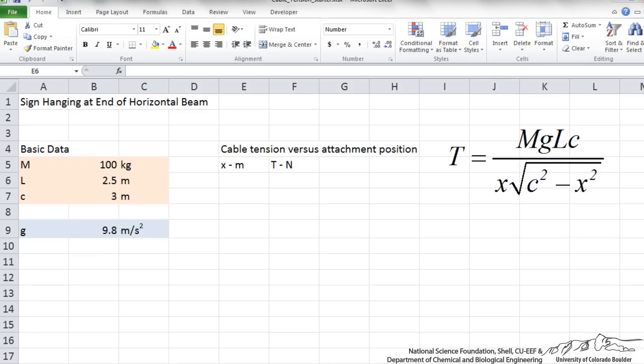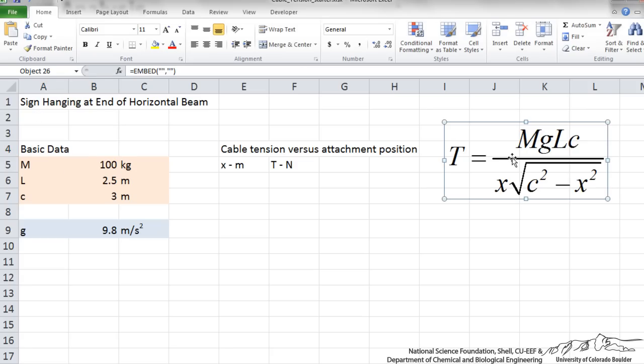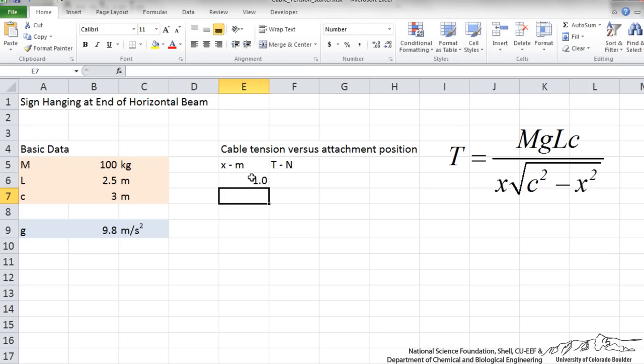Excel is a nice tool to do multiple engineering calculations because you can do case studies and it is a nice organized way. Over here on the left I have put in labels for our basic data. I have copied the formula for tension here. I am going to vary the cable attachment position from 1 meter in increments of 0.1 all the way up to 2.5 meters. So if I wanted to I could just go 1.2, 1.3, but there is a much easier way to do this in Excel.